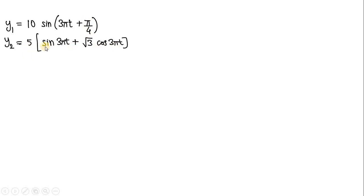In the second equation, y2 is written as a linear combination of two different sinusoidal functions — one is a sine function, the other is a cosine function, both having the same frequency. What we need to do is convert this linear combination into a single sine function of the form A sin(ωt + φ).